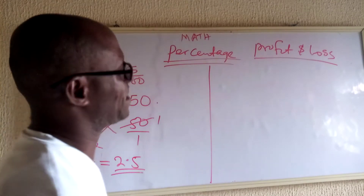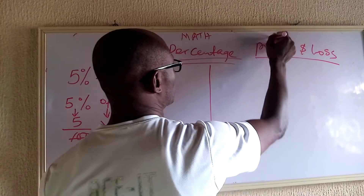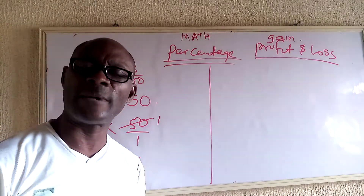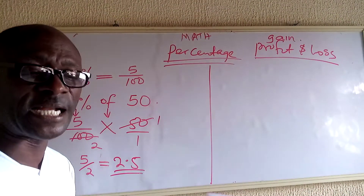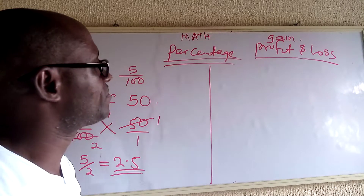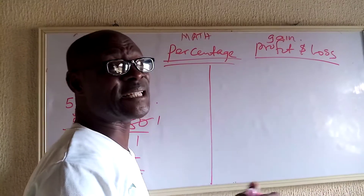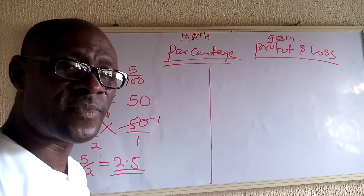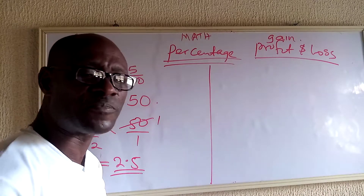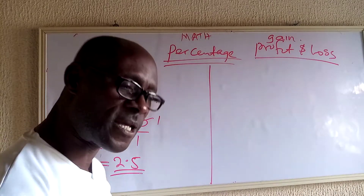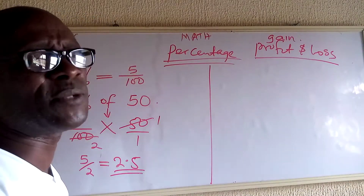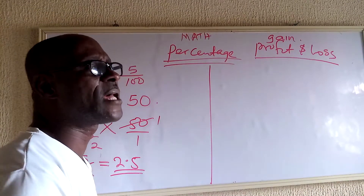Profit is the same thing as gain — take note of that. We can't talk about profit and loss without talking about cost price and selling price, because these are the two parameters that will lead us to either profit or a loss. Profit is made when the selling price is higher than the cost price. I want to write an expression that connects cost price, selling price, and the gain.